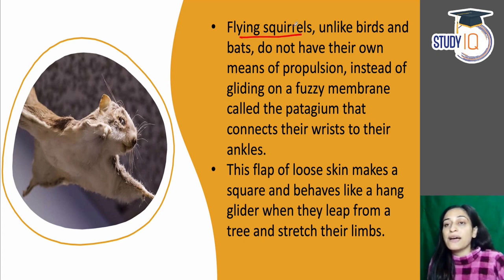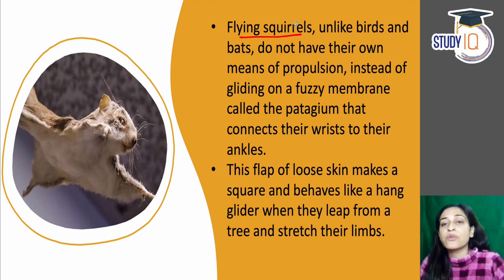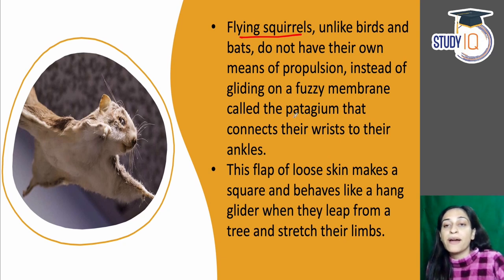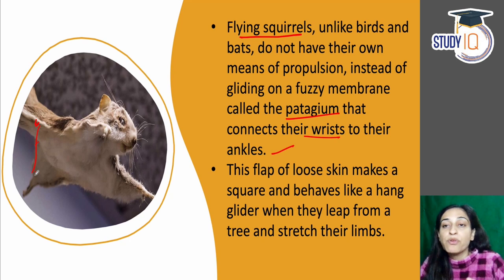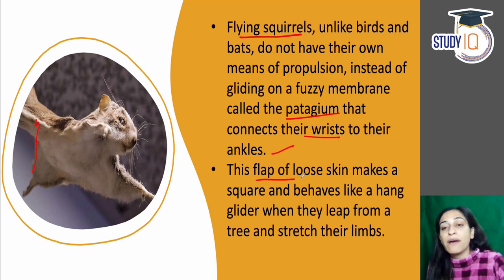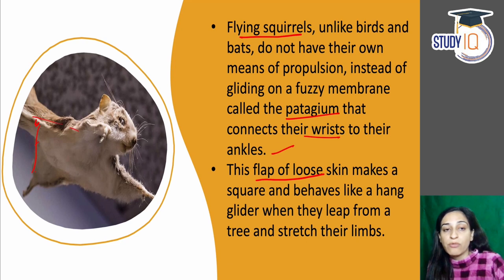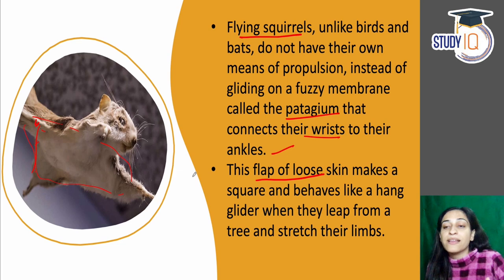Let's talk about flying squirrels — not birds or bats. This squirrel has a gliding ability. It has a fuzzy membrane called the patagium, which is connected to its wrists and ankles. Because of this gliding capability, the patagium looks like a flap of loose skin, and it acts like a hang glider.